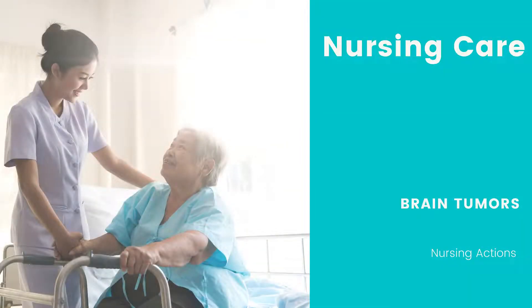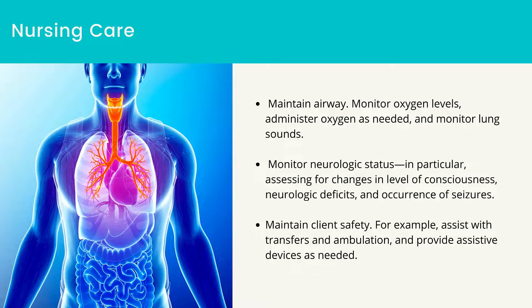Patient-centered care — nursing care: Maintain airway, monitor oxygen levels, administer oxygen as needed, and monitor lung sounds. Monitor neurologic status, in particular assessing for changes in level of consciousness, neurologic deficits, and occurrence of seizures. Maintain client safety — for example, assist with transfers and ambulation and provide assistive devices as needed. Implement seizure precautions and administer medications as prescribed.